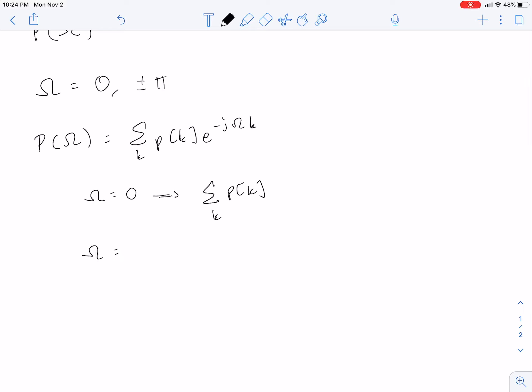If omega equals plus or minus pi, this becomes the sum of P of k e to the plus or minus j pi k. This term is essentially oscillating back and forth between positive one and negative one.